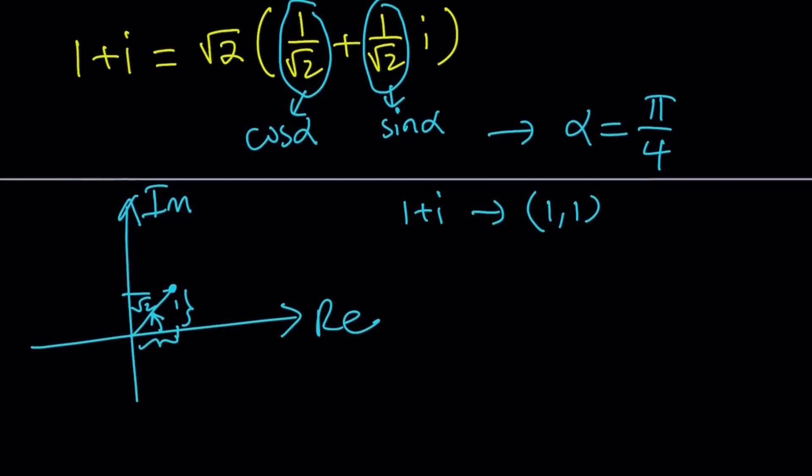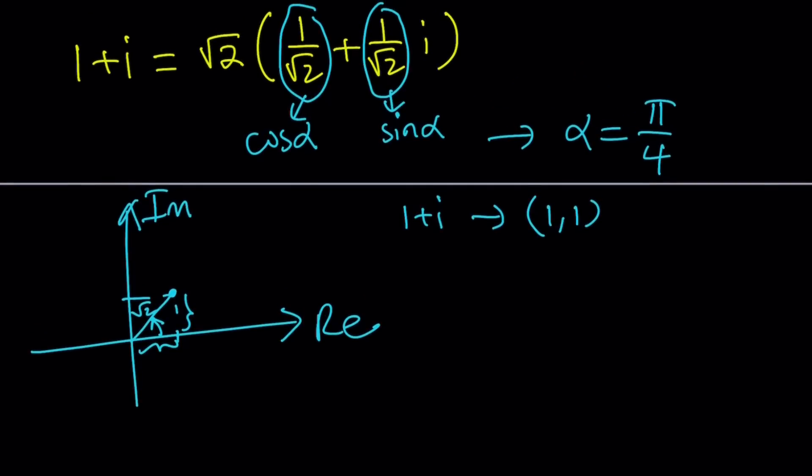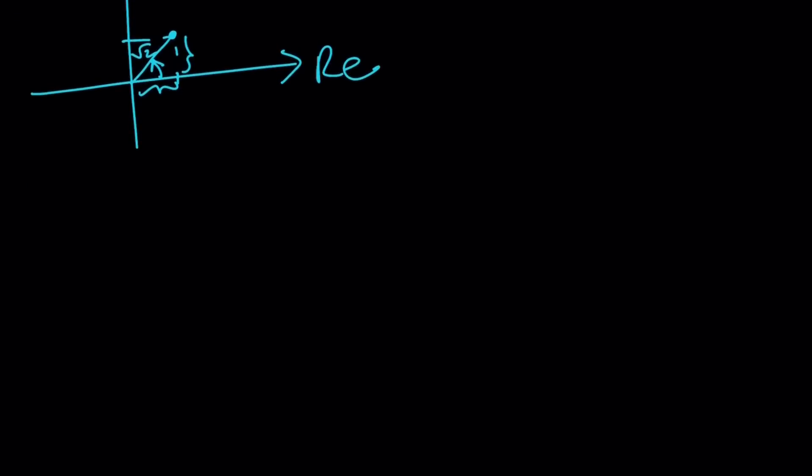Now we got our number in this form. Let's replace cosine alpha with cosine of pi over 4. So 1 plus i becomes, always write the modulus on the outside, square root of 2 times cosine pi over 4 plus i times sine pi over 4.